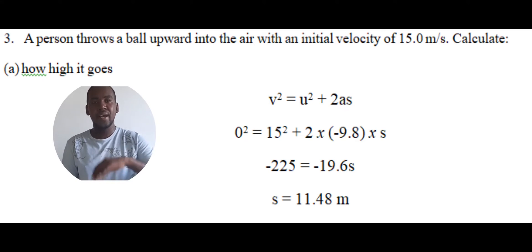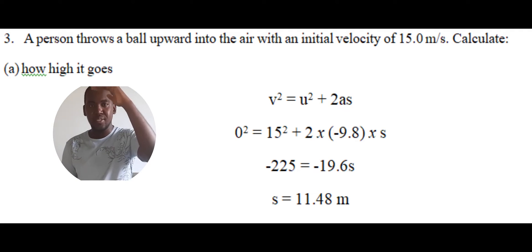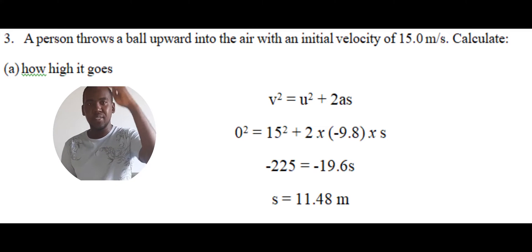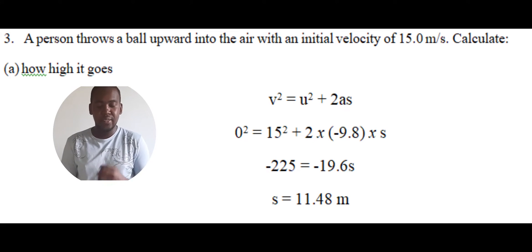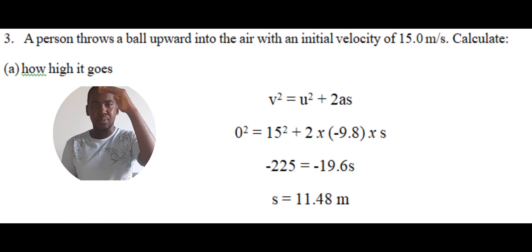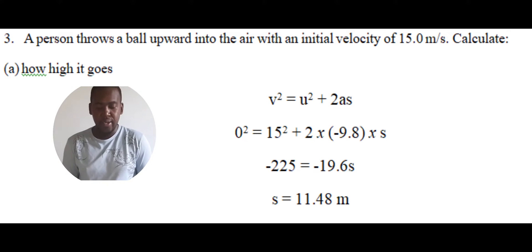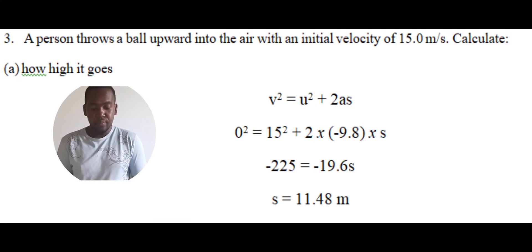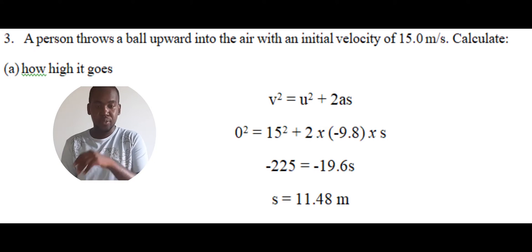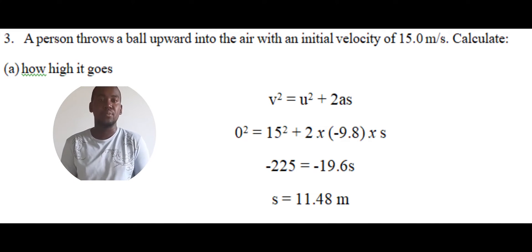Since the object is moving from 15 to 0, it's decelerating, so a is negative 9.8. Using v squared equals u squared plus 2as: v is 0, u is 15, a is negative 9.8. We get negative 225 equals negative 19.6s, divide both sides by negative 19.6, and s equals 11.48 meters.